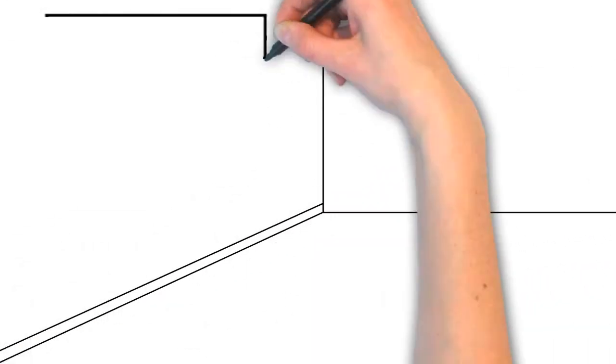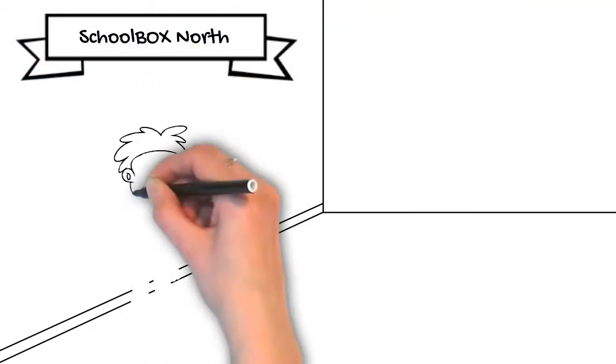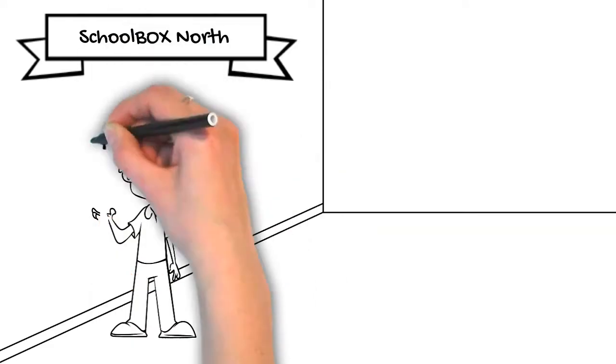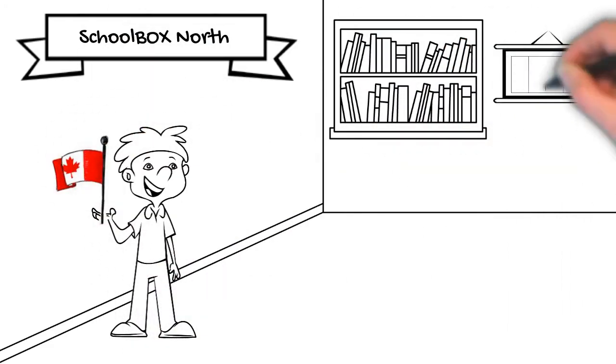We also make education possible for marginalized communities in Canada through our Schoolbox North program. In 2018 we inaugurated our first Indigenous Library in the community of Waubaskang in Treaty 3, Northern Ontario.